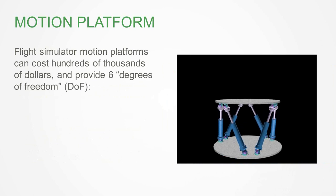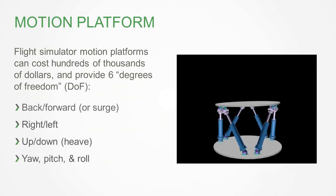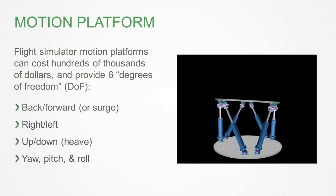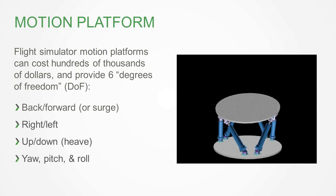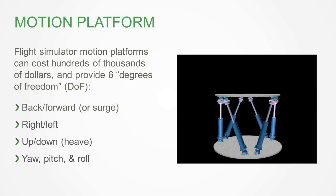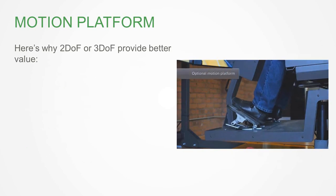I used to work in flight simulation where they had platforms with what's called six degrees of freedom – you can move in any direction in space. Those are expensive, and those simulators start at $8 million. That's certainly not what we have in our industry, but that is the top of the line. That's what extreme motion simulation would look like.